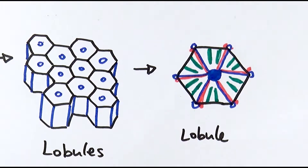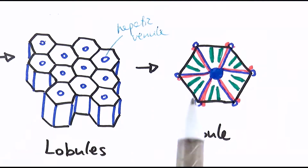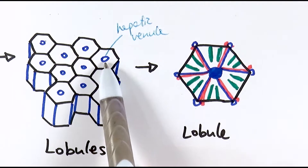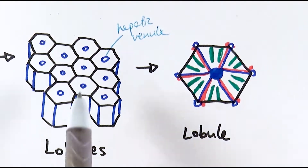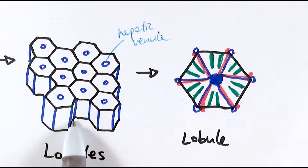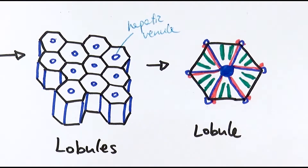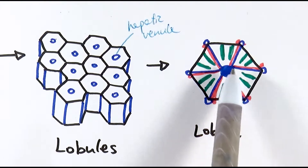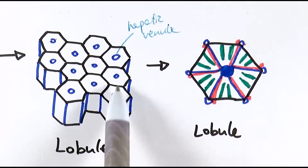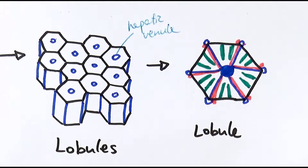Before I show you the actual structure, here is a general idea of what it looks like. The centre bit here is actually the hepatic venule. Loads of these hepatic venules act like a drain where every bit of blood inside the lobule would ultimately drain into it and be carried away in the hepatic vein.